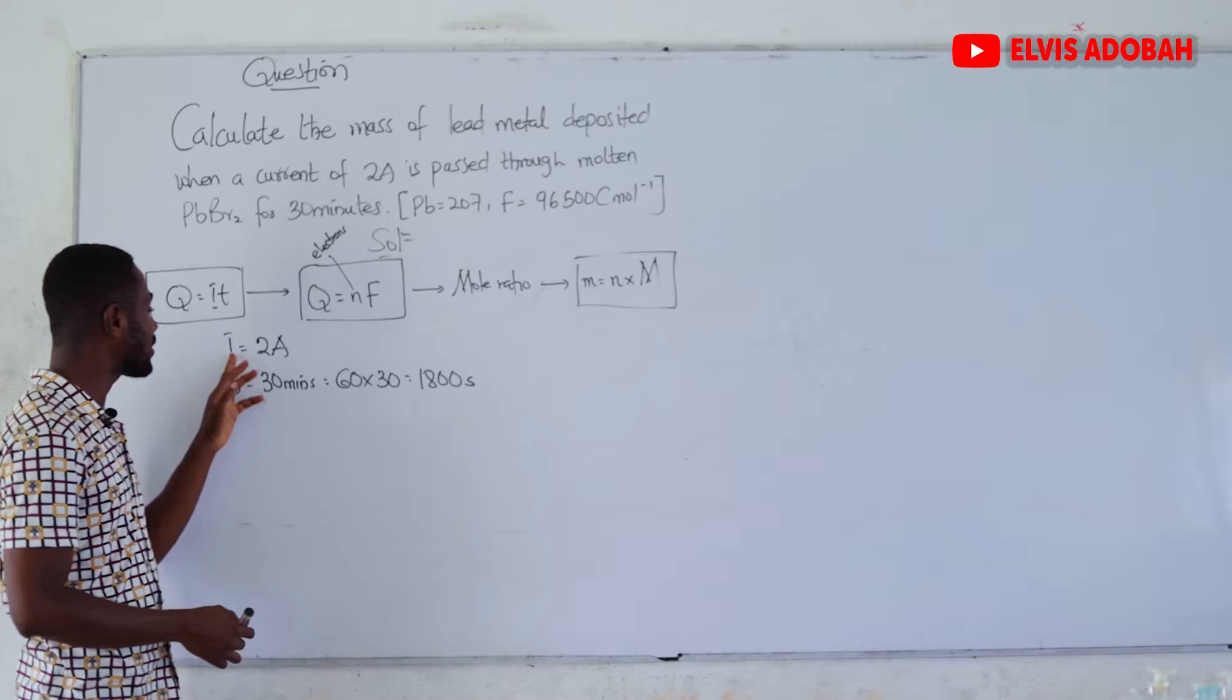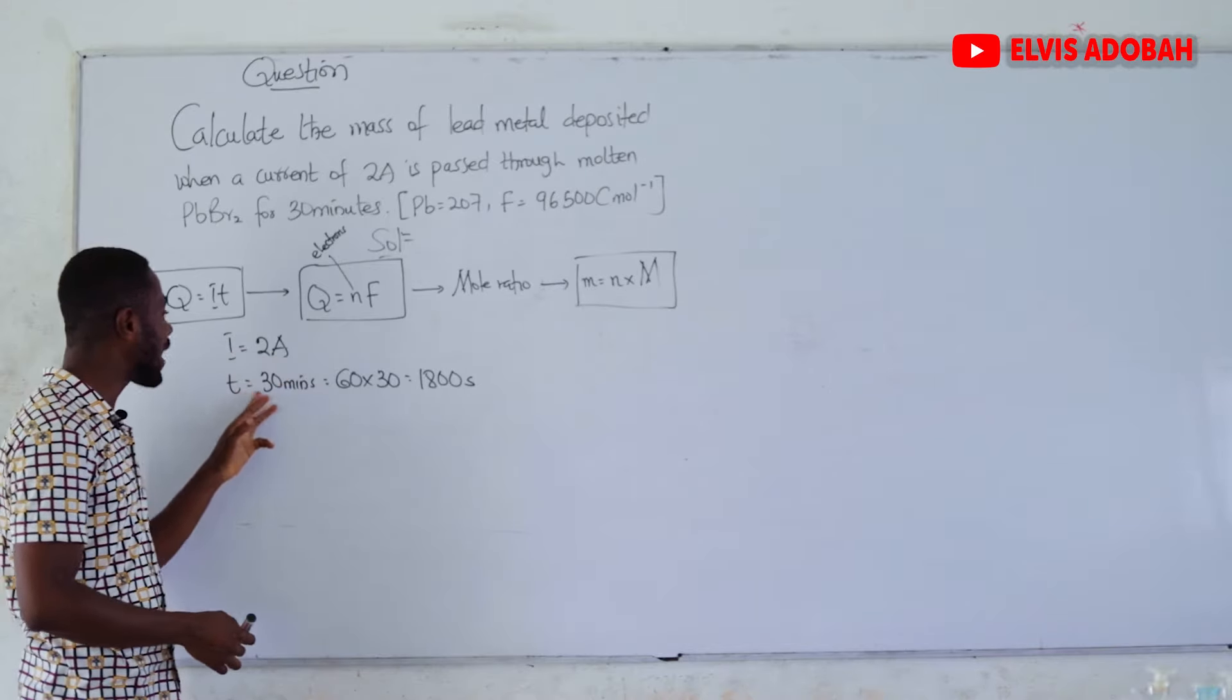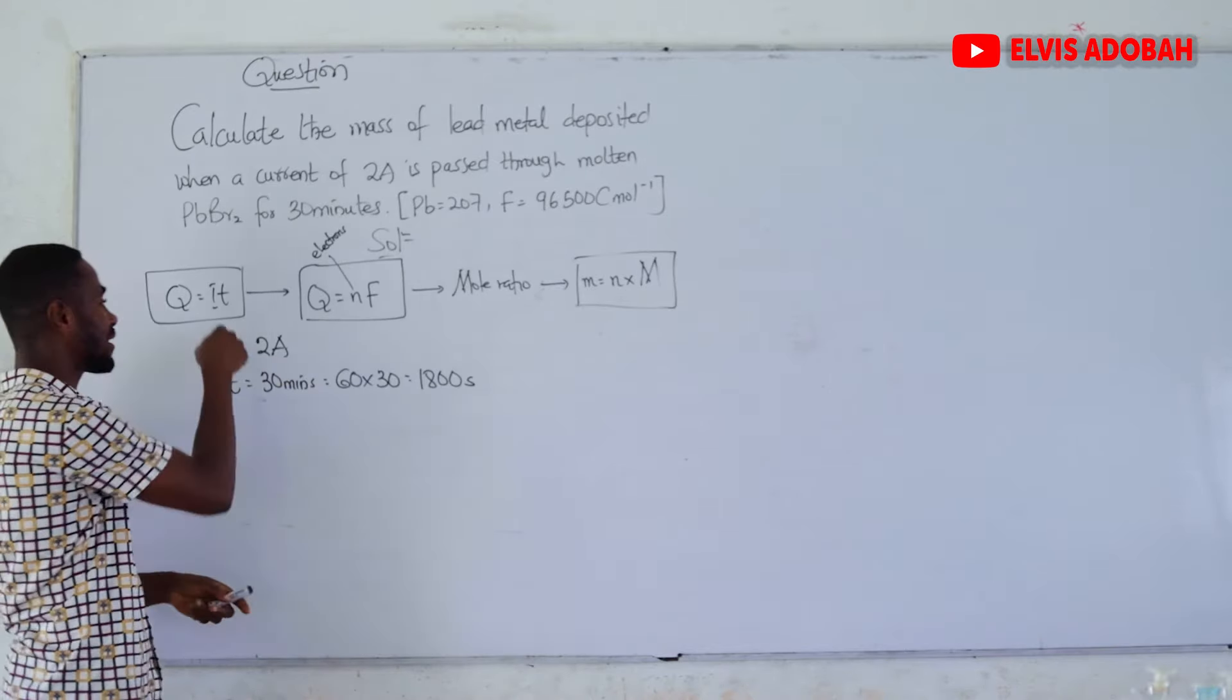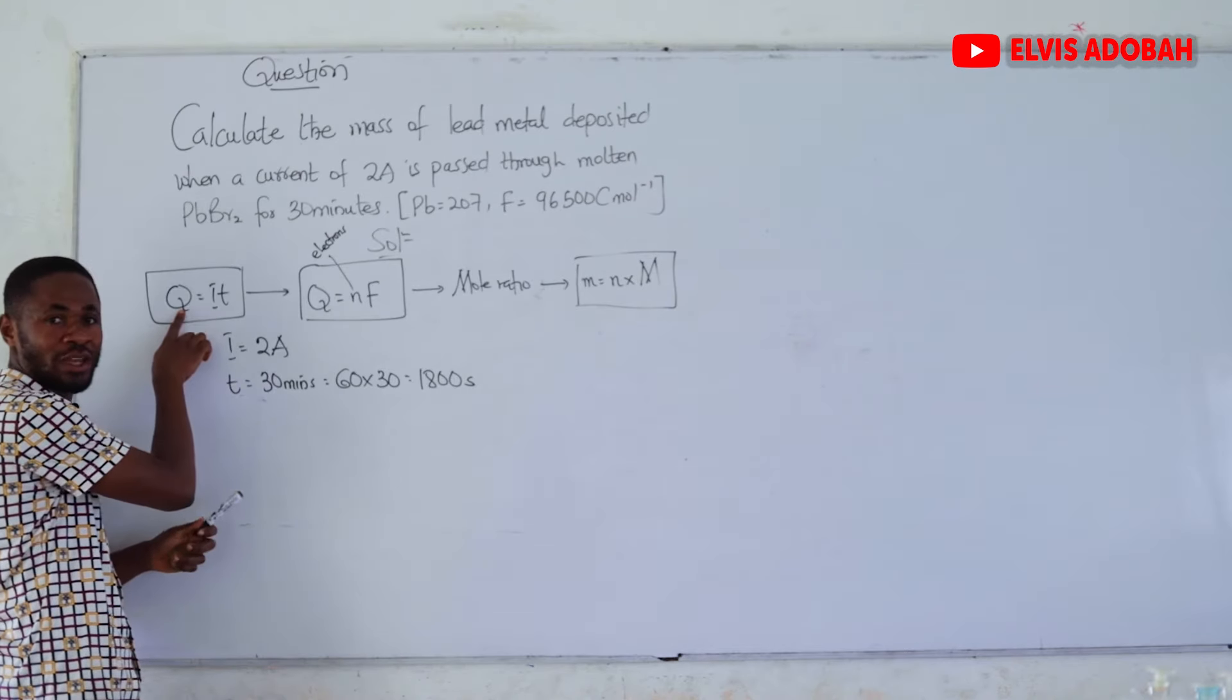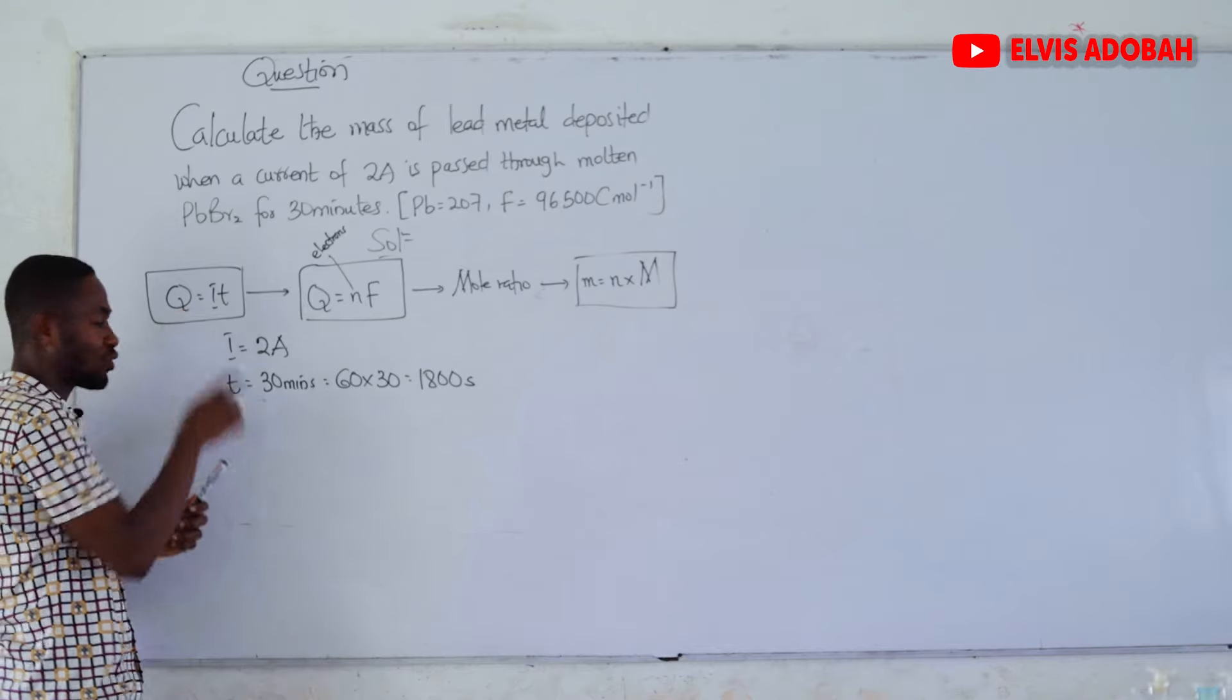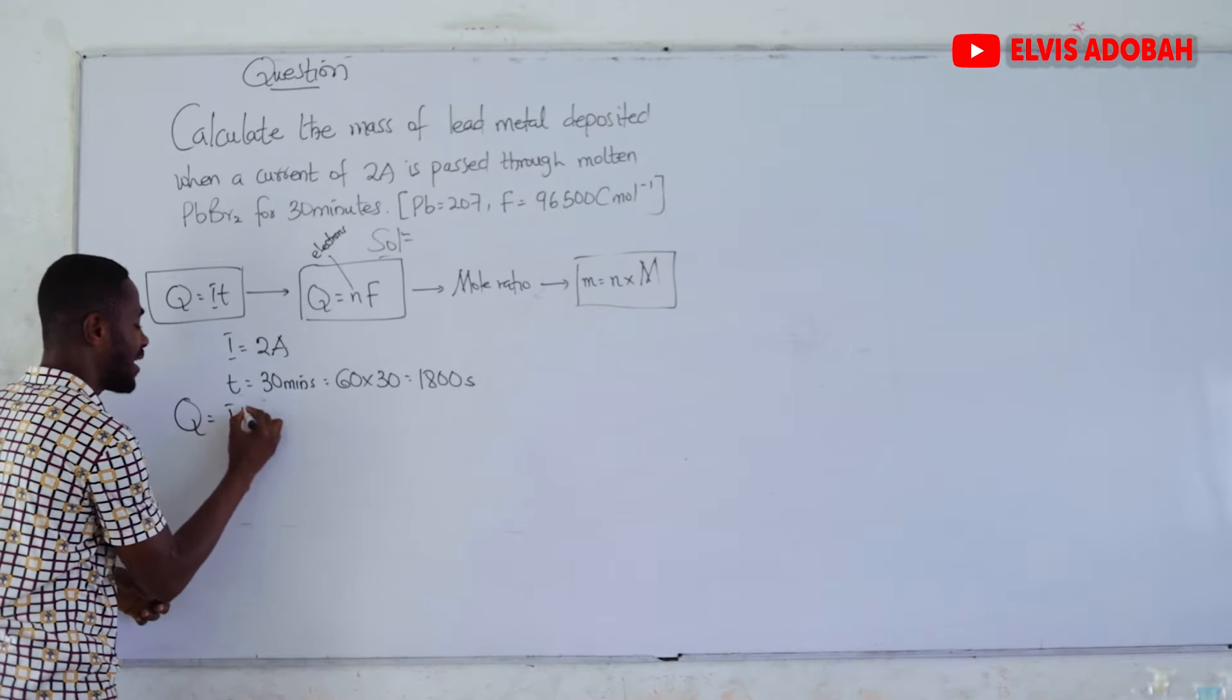But we have to convert the time from minutes to seconds. We know every 60 seconds make a minute, so 30 minutes will be equal to 60 times 30, and that should give us 1,800 seconds. We have our current in amperes and our time in seconds.